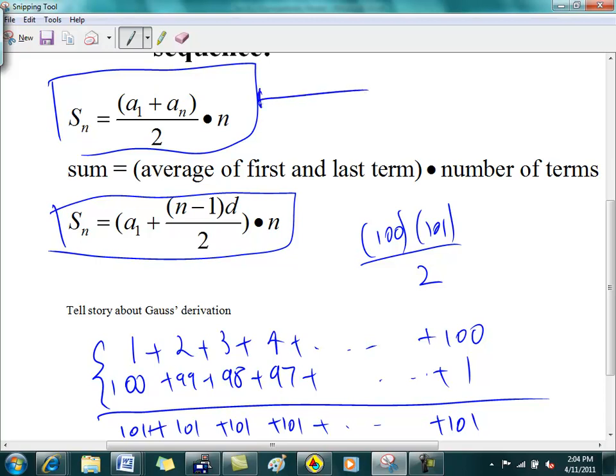Comes out to this formula here. So what that formula is telling you is you take the first number and the last number, you average it, and you multiply by the number of numbers you have. Isn't that brilliant? Isn't that brilliant at the age of 10?